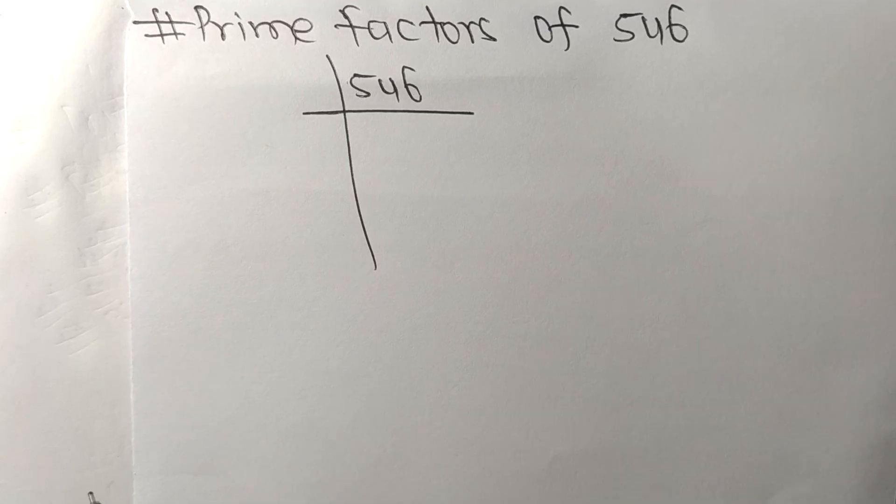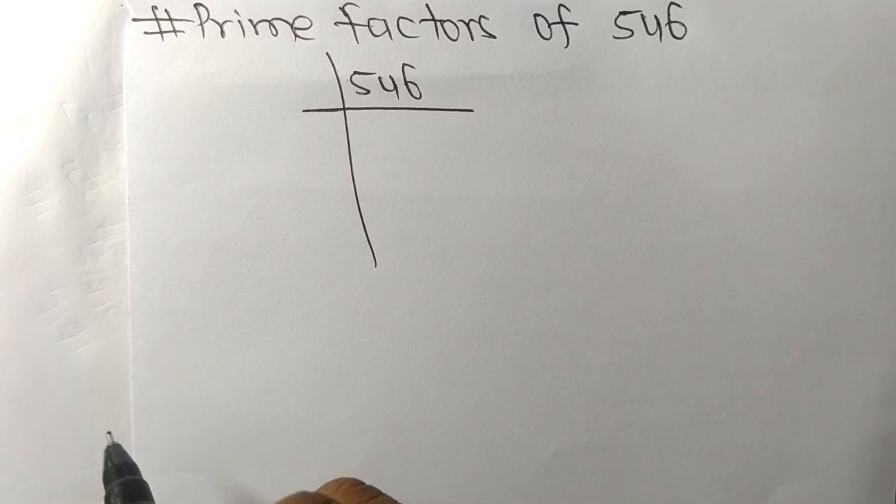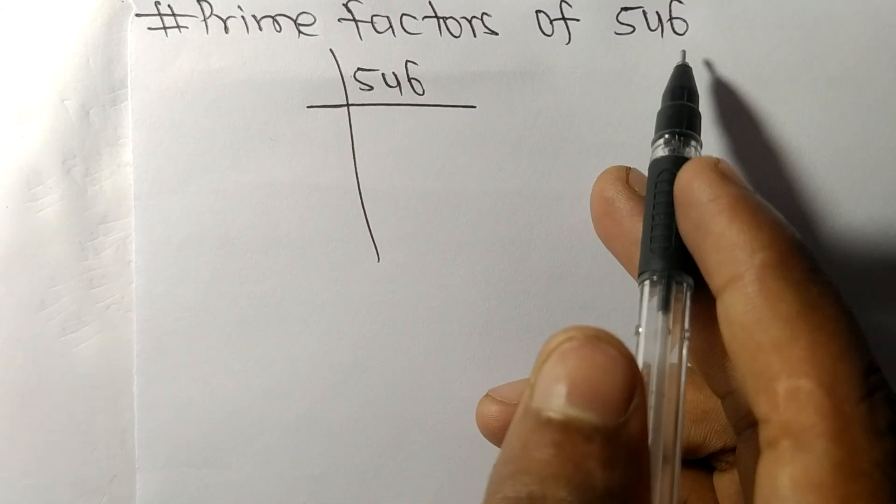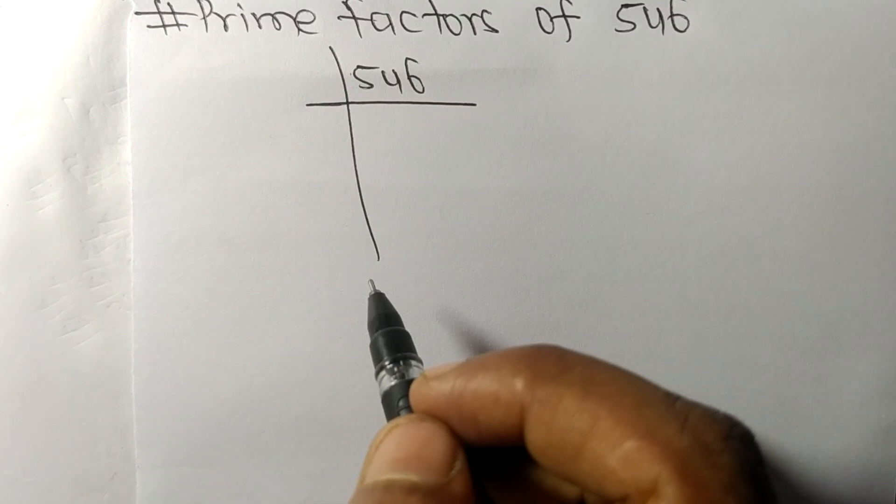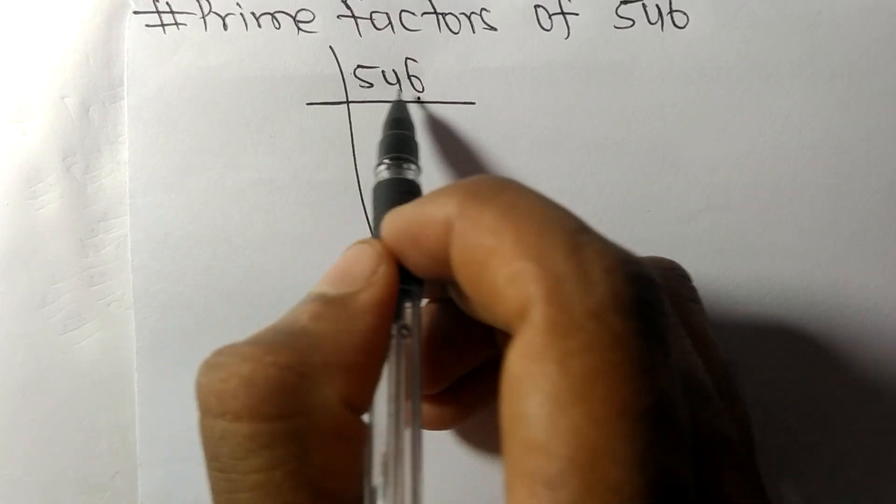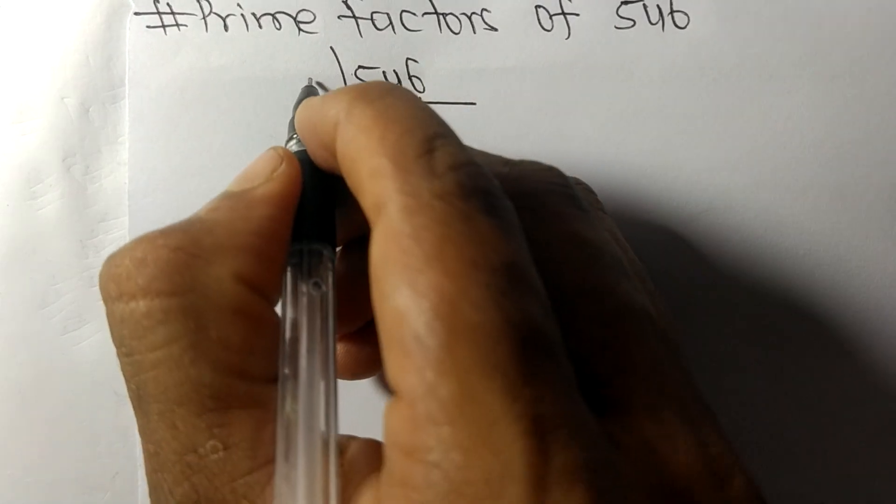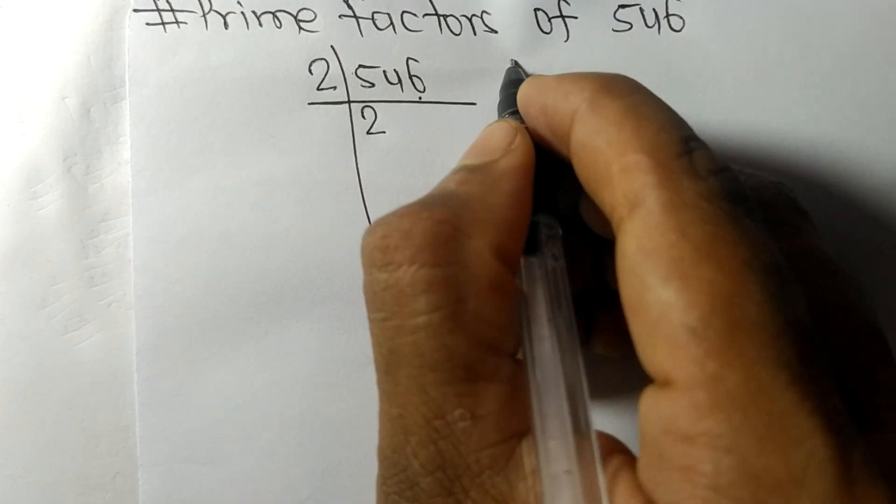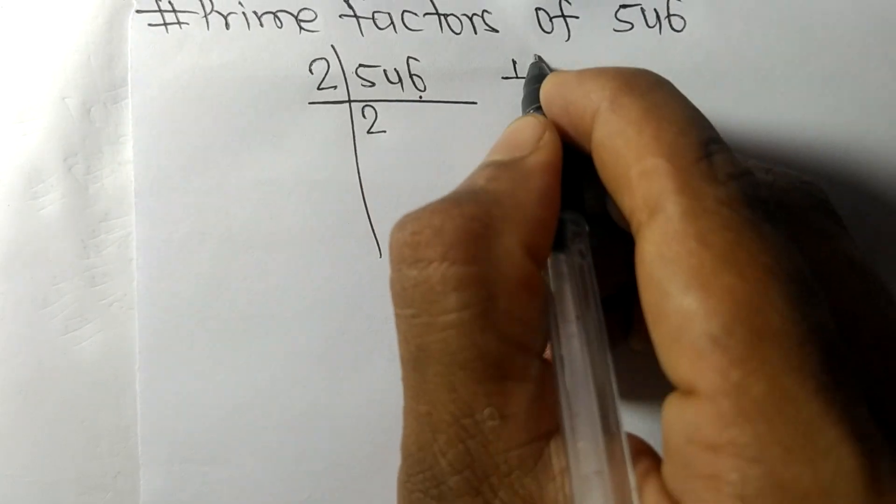Today in this video, we shall learn to find the prime factors of 546. Since it ends in 6, this number is divisible by 2. 2 times 2 equals 4 with remainder 1.